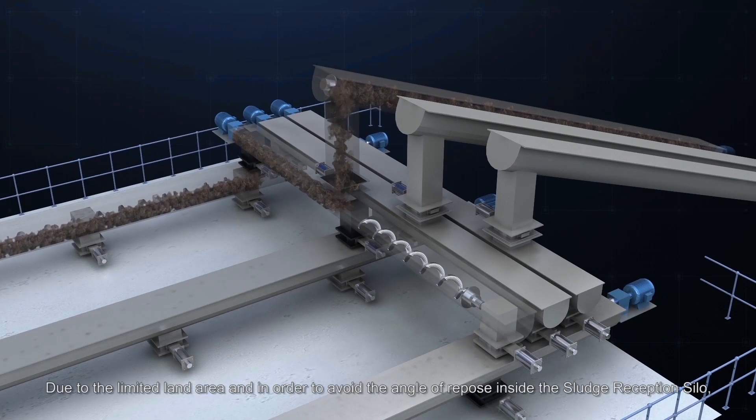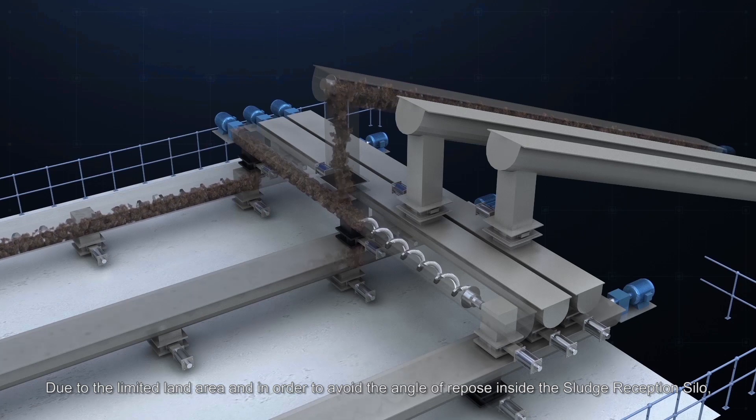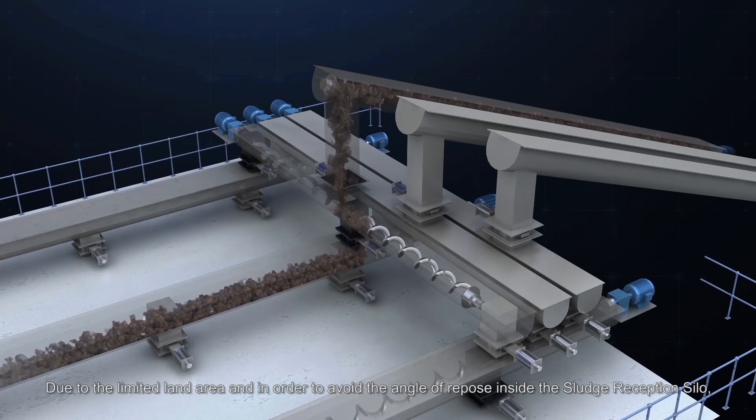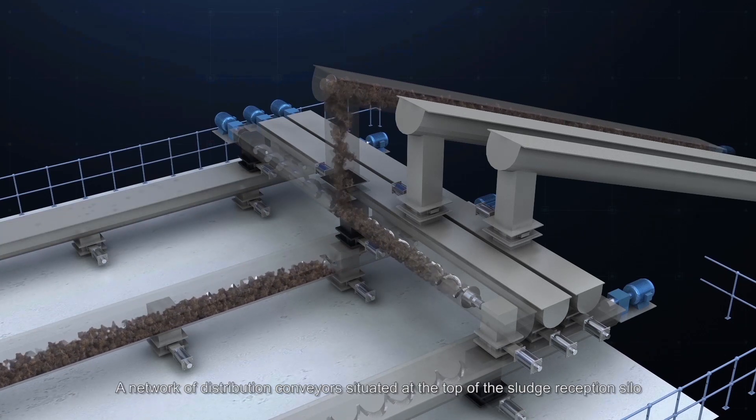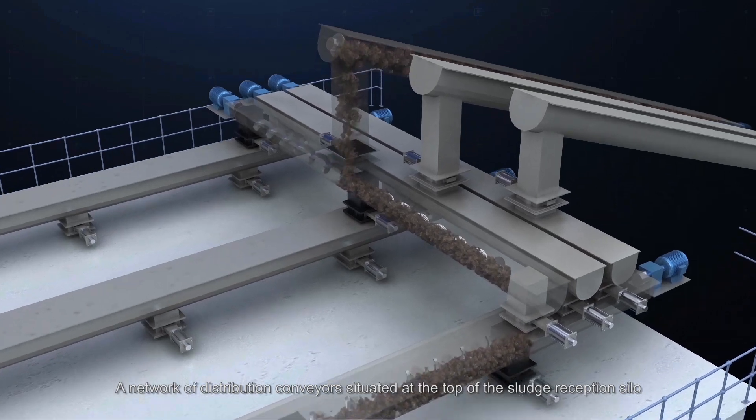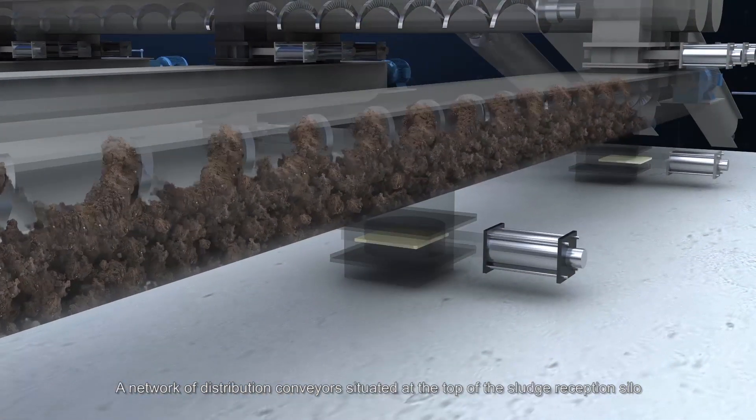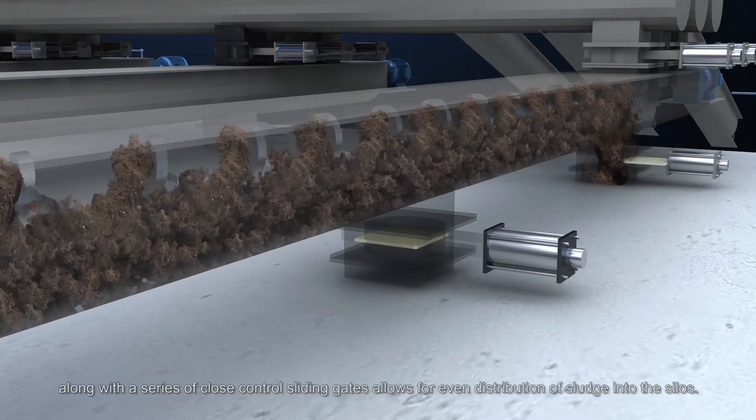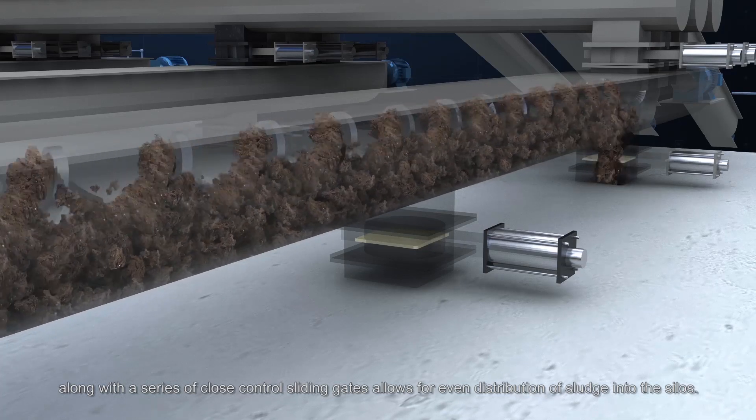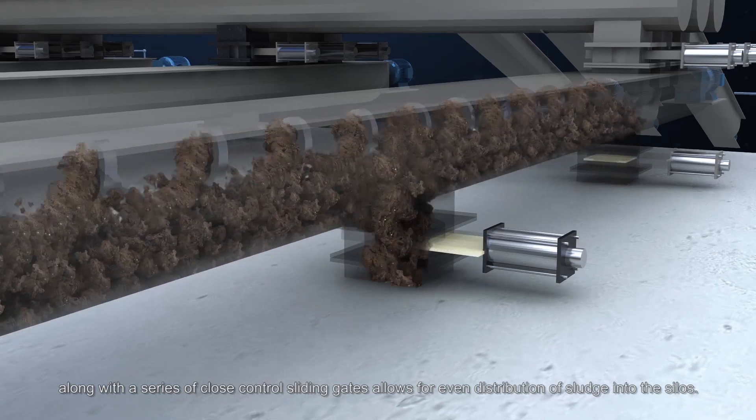Due to the limited land area, and in order to avoid the angle of repose inside the sludge reception silo, a network of distribution conveyors situated at the top of the sludge reception silo, along with a series of closed control sliding gates, allows for even distribution of sludge into the silos.